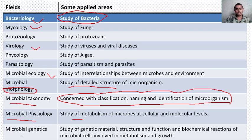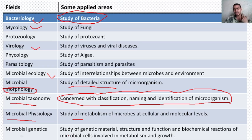Microbial physiology is the study of the metabolism of microbes at the cellular and molecular levels. Microbial genetics is the study of genetic material structure and function, and the biochemical reactions of microbial cells involved in metabolism and growth — covering the genetic material, its structure, function, chemical reactions, metabolic functions, and how the growth of these organisms takes place.